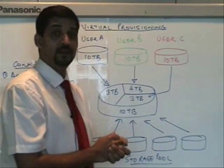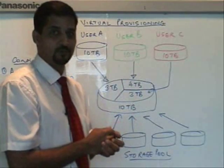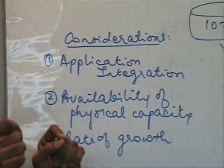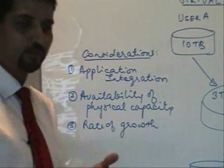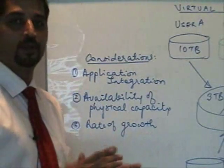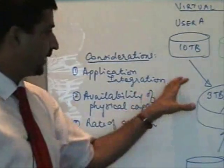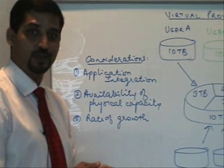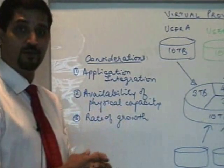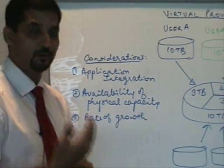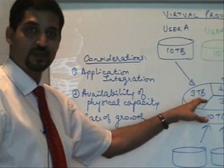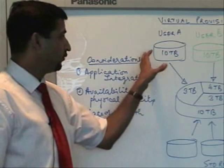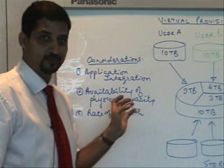It's all about getting the configuration right, and there are certain considerations you must have in mind when looking at virtual provisioning. The most important one is how it integrates with the application. Application integration is key because if the application is not aware of the concepts of virtual provisioning, it will end up using all the capacity. For example, in earlier versions of databases, you would not be able to provision virtually 10 terabytes while giving only 3 terabytes physically, because the database would take up all the allocated capacity. But with newer versions of databases that are aware of virtual provisioning, they can auto-extend and automatically understand the physical versus virtual allocation, borrowing capacity as and when required.